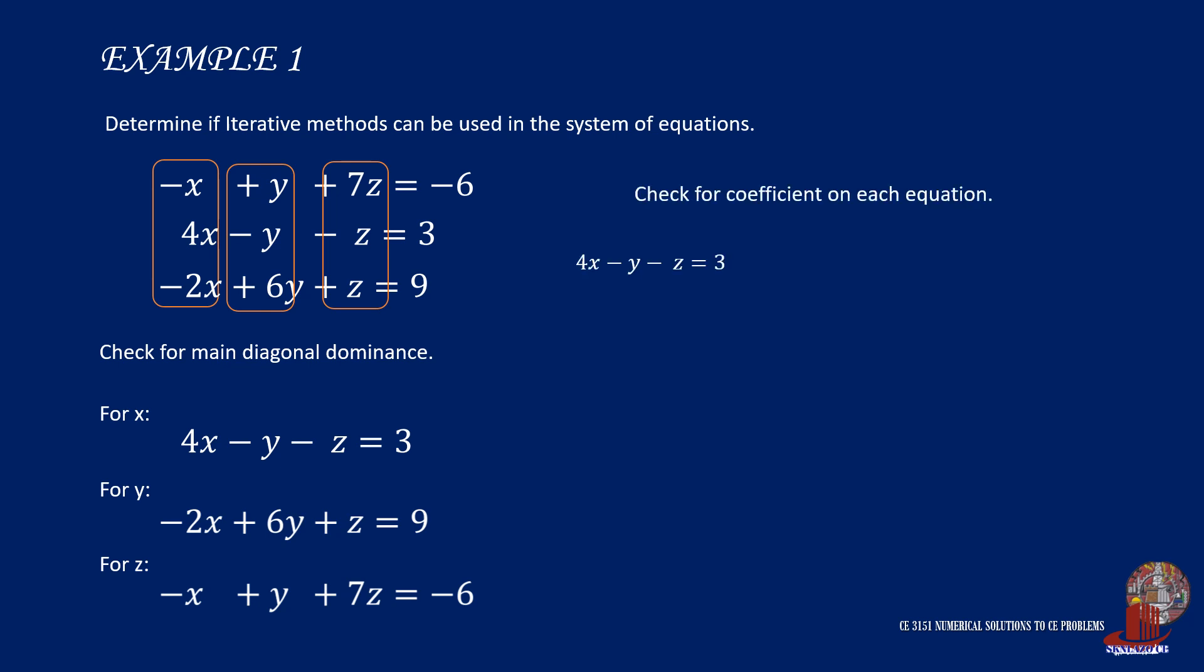With the equation for x, we can try if the absolute value of x is greater than or equal to the absolute values of the other two terms. That is, is the absolute value of 4 greater than or equal to the absolute value of −1 plus the absolute value of another −1?